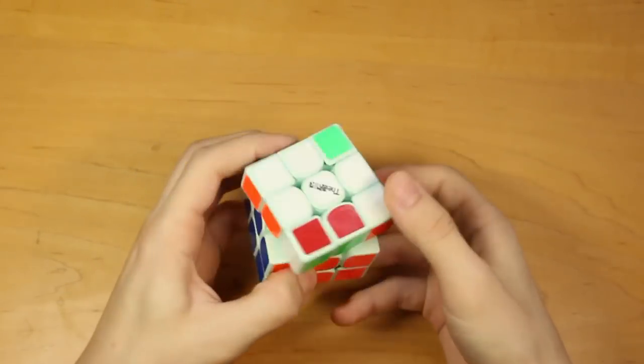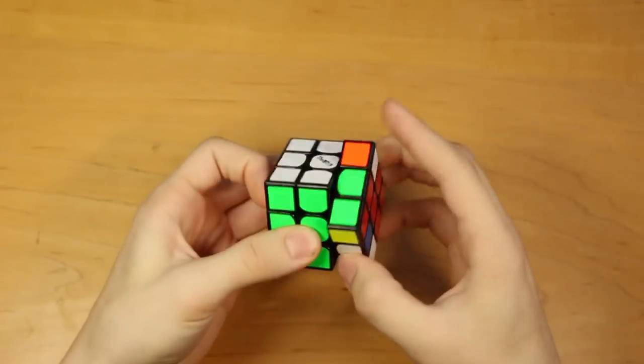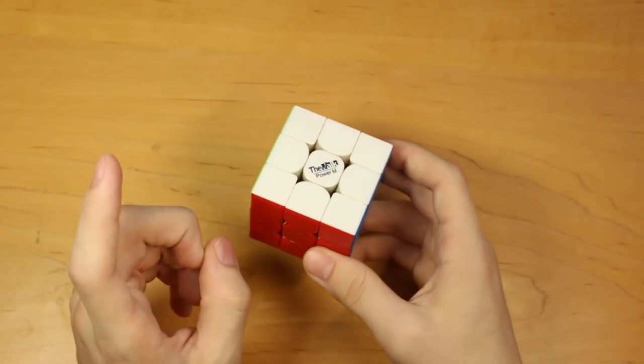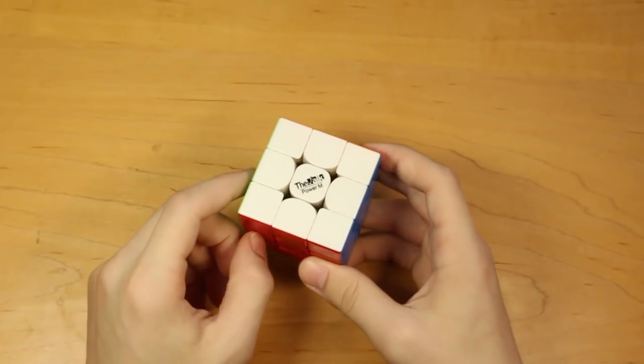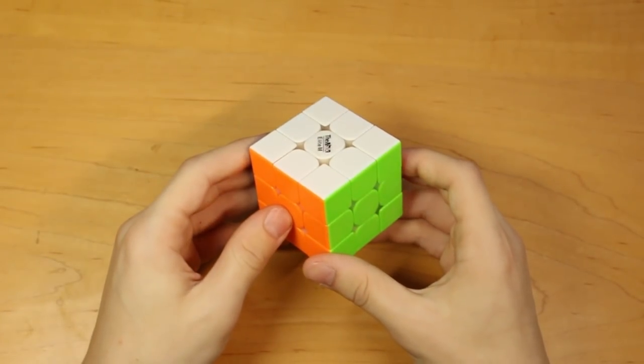This is a limited edition mint-colored Valk, which I think just looks really cool. This is a mini Valk, which turns fine. Pretty cool cube. This is my Valk Power M, which I got my previous, not current, PR average of 7.20 on.